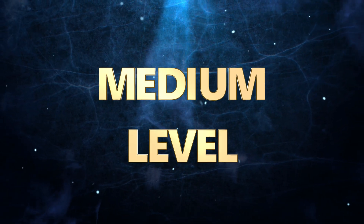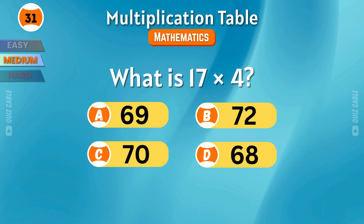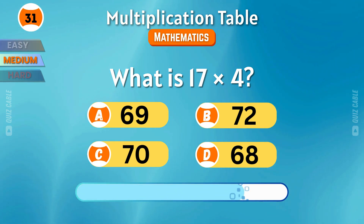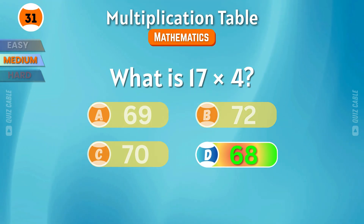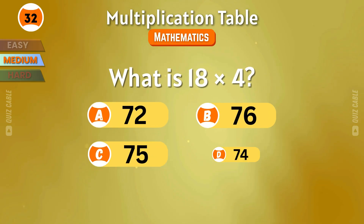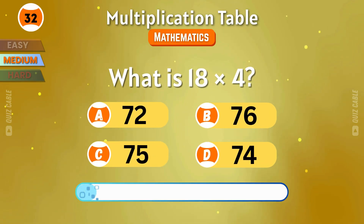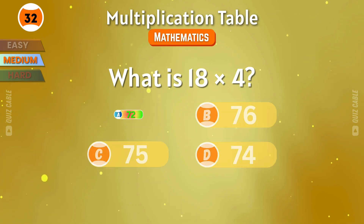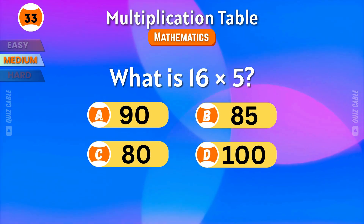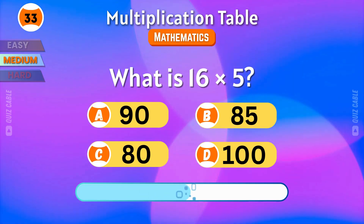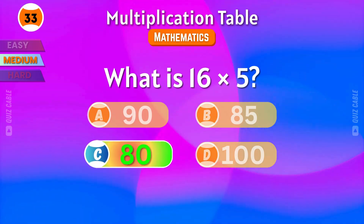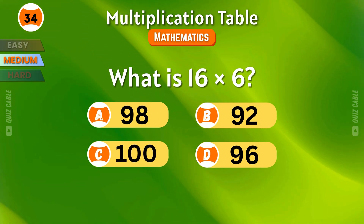Medium level! What is 17 times 4? The answer is 68. What is 18 times 4? That's 72. What is 16 times 5? Correct — 80.